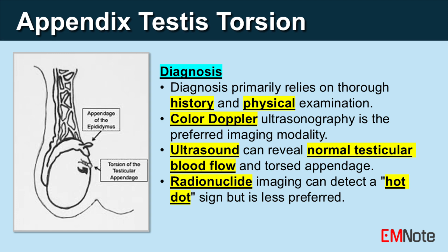A torsed appendage exceeding 5.6 millimeters in size. Radionuclide imaging can be used to detect a hot dot sign at the site of torsion, but is less preferred than ultrasound due to its lower sensitivity and longer procedure time.